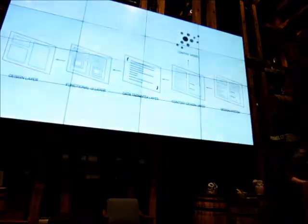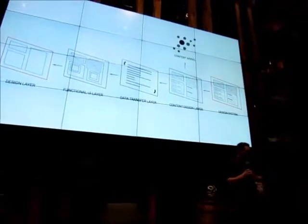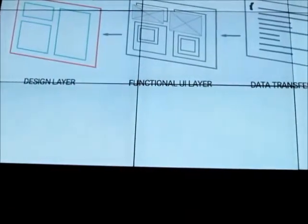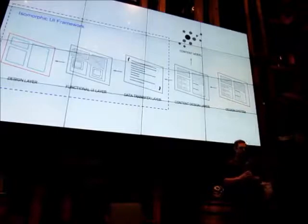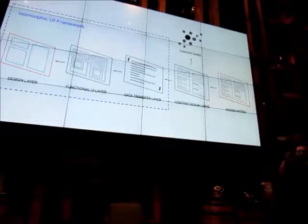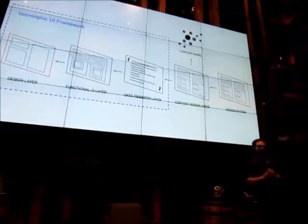So here's the anatomy of a design system — something I came up with, but you'll see a lot of takes on this. In the first layer you have the design layer. Next, we have what I call the functional UI layer. We have a data transfer layer. We have a content design layer that accesses the content model. All of that comes together to make a design system. The first three steps are kind of the bare minimum to make what's called an isomorphic UI framework. Polaris is an isomorphic UI framework — you can take that UI and put it on any other back end and it will still work the same way. You just re-hook up the data transfer layer and you're set. That's where the word isomorphic comes from. But the rest of the layers are where you really unlock the power of the design system.